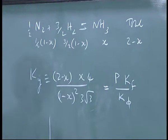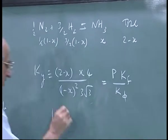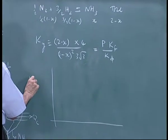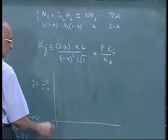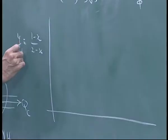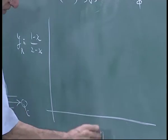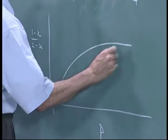I told you when you plot this, that is if you plot Y ammonia which is 1-X by 2-X, this is Y in the reactor versus pressure, you get a curve that looks like this.